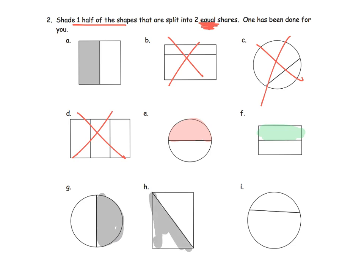And lastly, this guy. Two pieces, but they're not equal. So, I'm going to cross that guy off. Half.